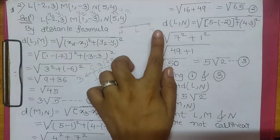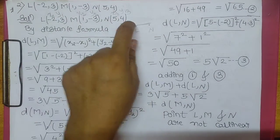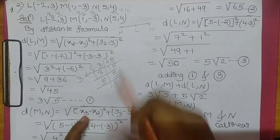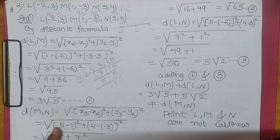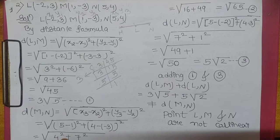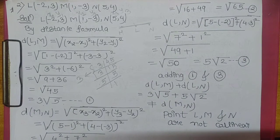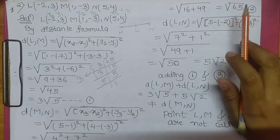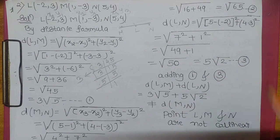We will find distance of MN. MN ka distance formula: square root of (x3 minus x2) ka square plus (y3 minus y2) ka square. x3 = 5, x2 = 1, y3 = 4, y2 = minus 3. 5 minus 1 = 4, 4 minus minus 3 = 4 plus 3 = 7. 4 ka square 16, 7 ka square 49. 16 plus 49 = square root of 65. Square root of 65 ka simplification possible nahi hai, so we will stop here.